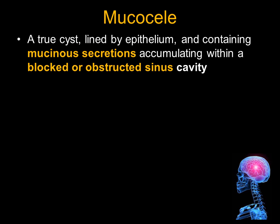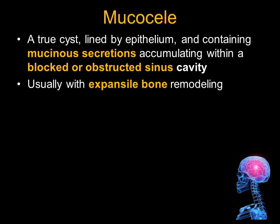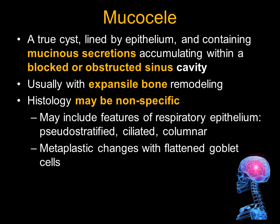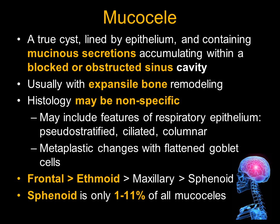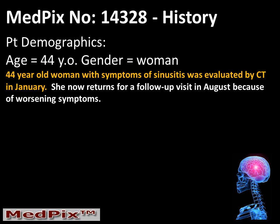Our patient actually has a mucocele. A mucocele is a true cyst lined by epithelium and containing mucous secretions. The sinus ostium is obstructed, and the sinus cavity cannot drain. This results in secondary expansion of the sinus cavity with bony remodeling. The histology is often nonspecific because of the chronic nature of the obstructed sinus ostium. The most common location for a mucocele is in the frontal sinus, and the least common location is in the sphenoid sinus, which represents less than 10% of all mucoceles.